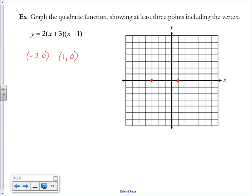If we're looking for an X coordinate that is halfway between those two points, if you can't do it mentally, you can always take the average of these two X values. Negative 3 plus 1 is negative 2, divided by 2 is negative 1. Negative 1 is the X coordinate of the vertex, halfway between the two X intercepts.